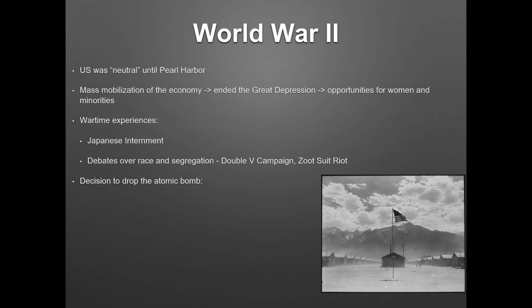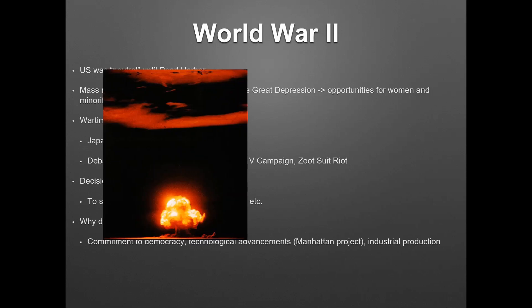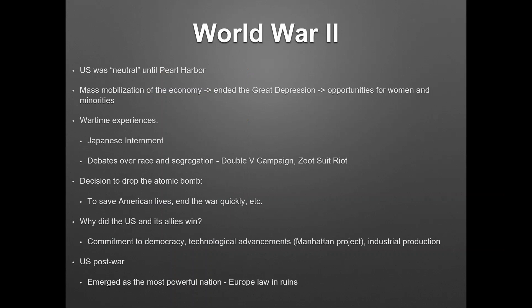America is going to drop the atomic bomb to end the war with Japan in August, against Hiroshima and Nagasaki. The argument was this was meant to save lives and end the war quickly. Why did America and their allies win World War II? They are democratic countries with a commitment to democracy. They had technological advancements and better technology over time, but really the big thing is industrial production — they had a much stronger industrial production, and it got worse and worse for Germany as the war went on. After World War II, America will emerge as the most powerful nation. Europe is going to be in ruins, and America is going to need to help rebuild Europe.